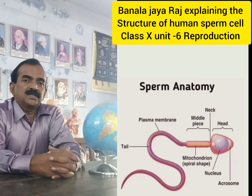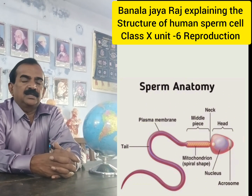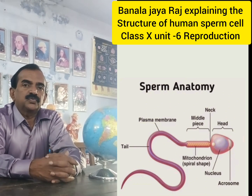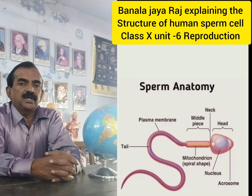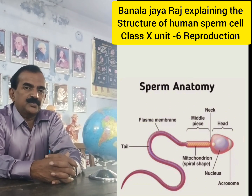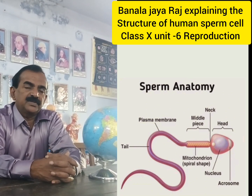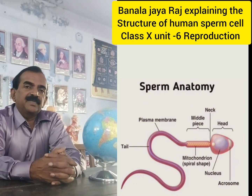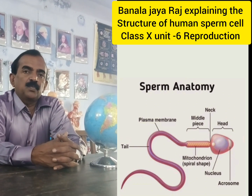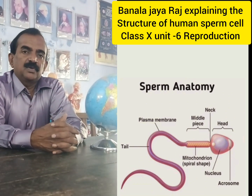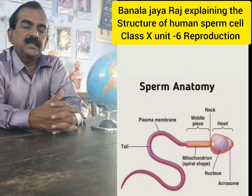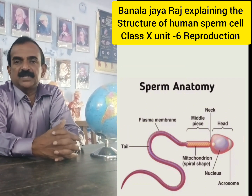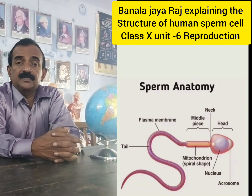The sperm also has a long tail, which is useful for swimming inside the body of the female. The sperm may swim from the cervix to the uterus, and up to the portion of the fallopian tube.